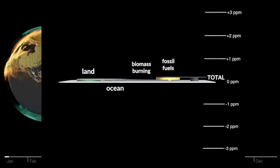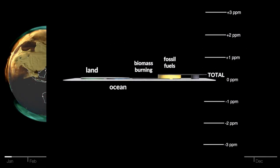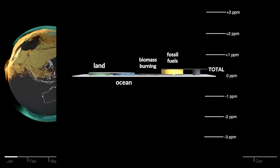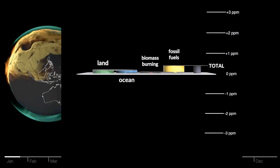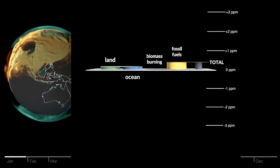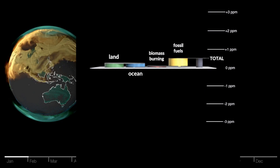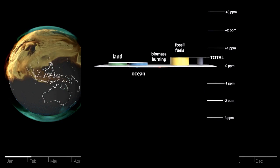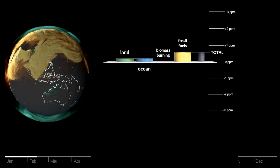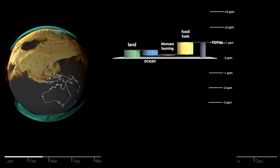The easiest way to see how all these processes contribute to the changes in carbon dioxide levels is to use a waterfall graph. Here, the individual contributions can be clearly observed at the different times of the year.